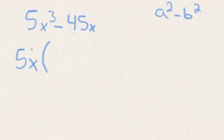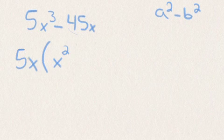I'm going to add a parenthesis. I'm going to ask 5x times what gives me 5x cubed? Well that answer is just x squared. Because the 5 times that gives us 5 up there. x times x squared. Add the exponents together and we'll get that x cubed.